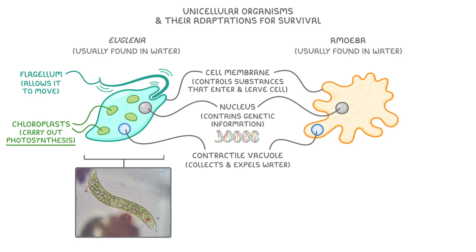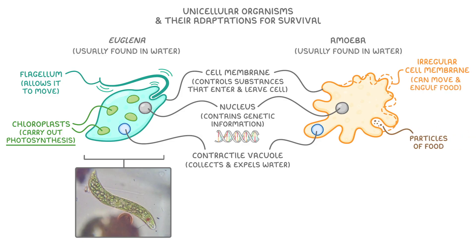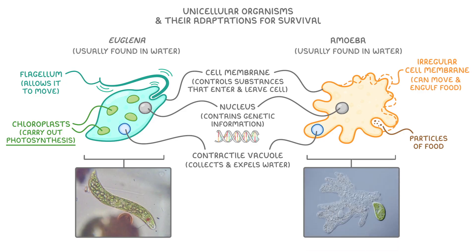Moving on to the amoeba, one of its distinctive characteristics is that it has an irregular cell membrane, which lets the cell change shape. This means that the amoeba can move around its environment, and it can also surround and engulf food, like these particles of food here. For comparison, this is a magnified photo of an amoeba about to eat another unicellular organism.